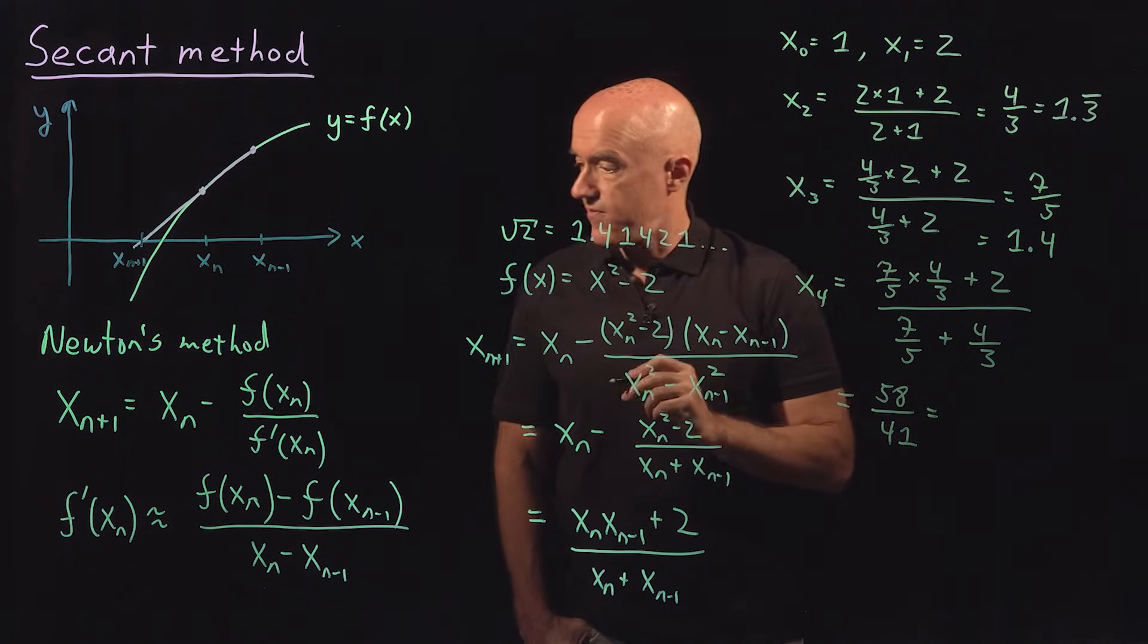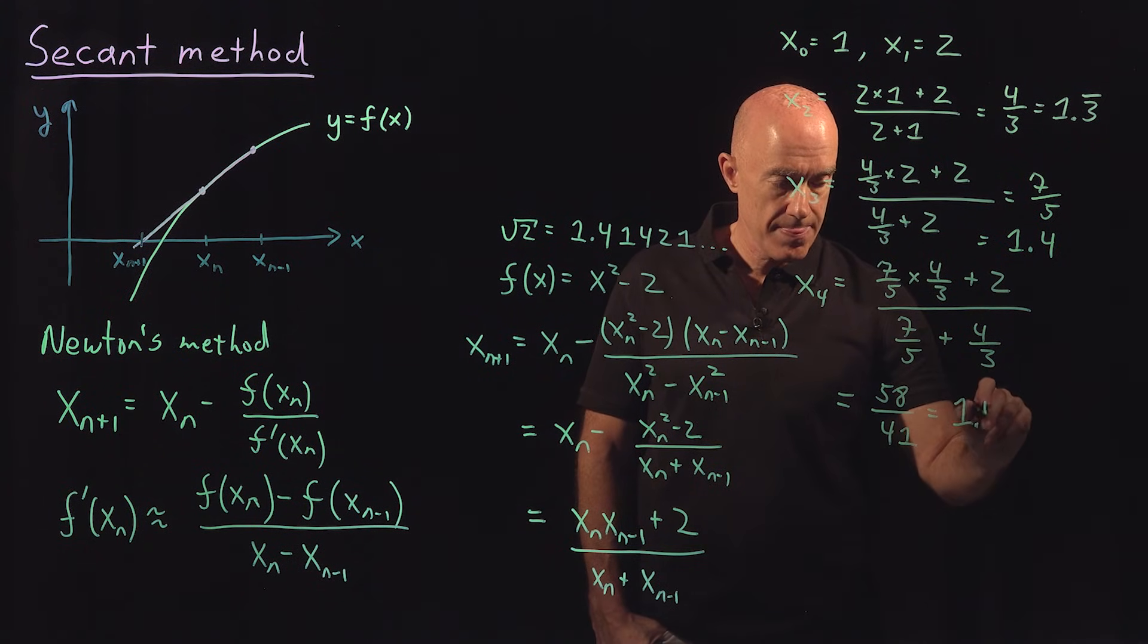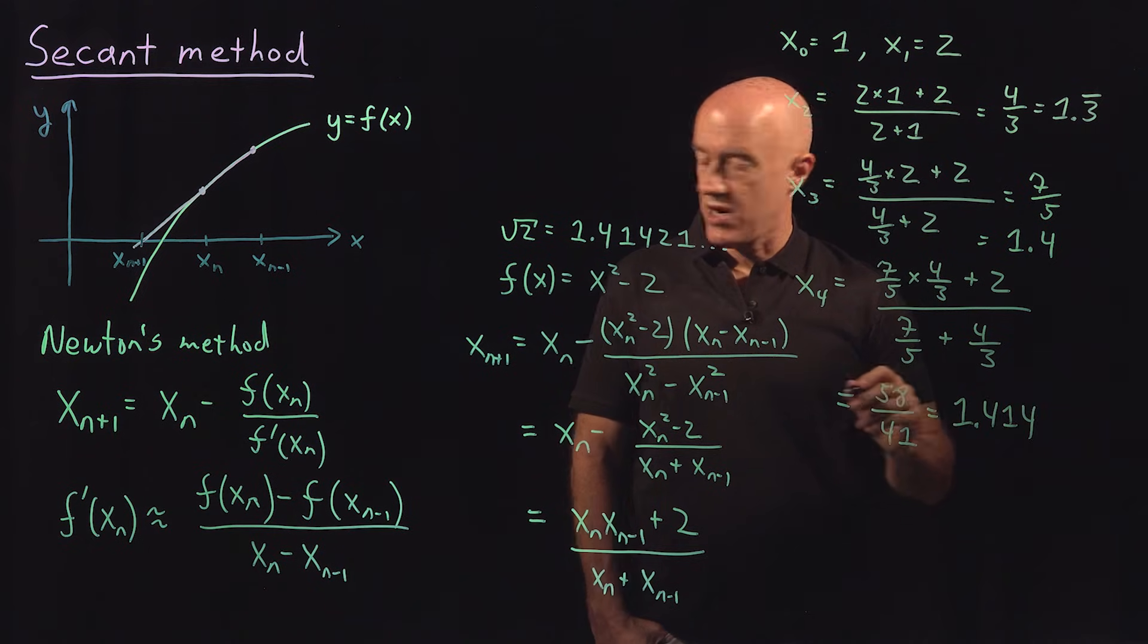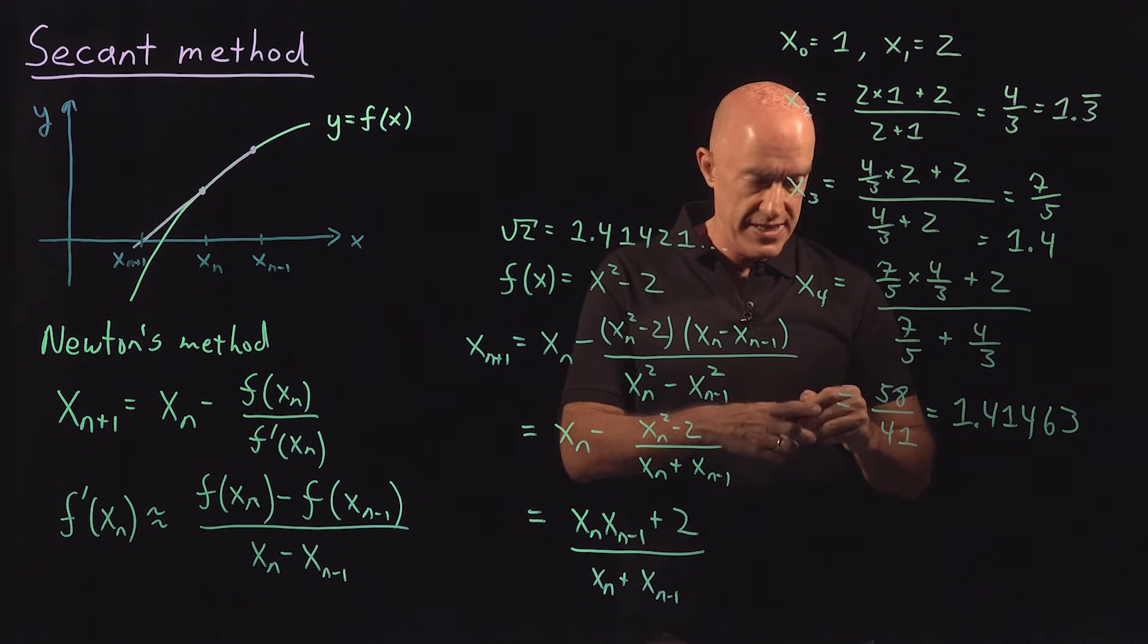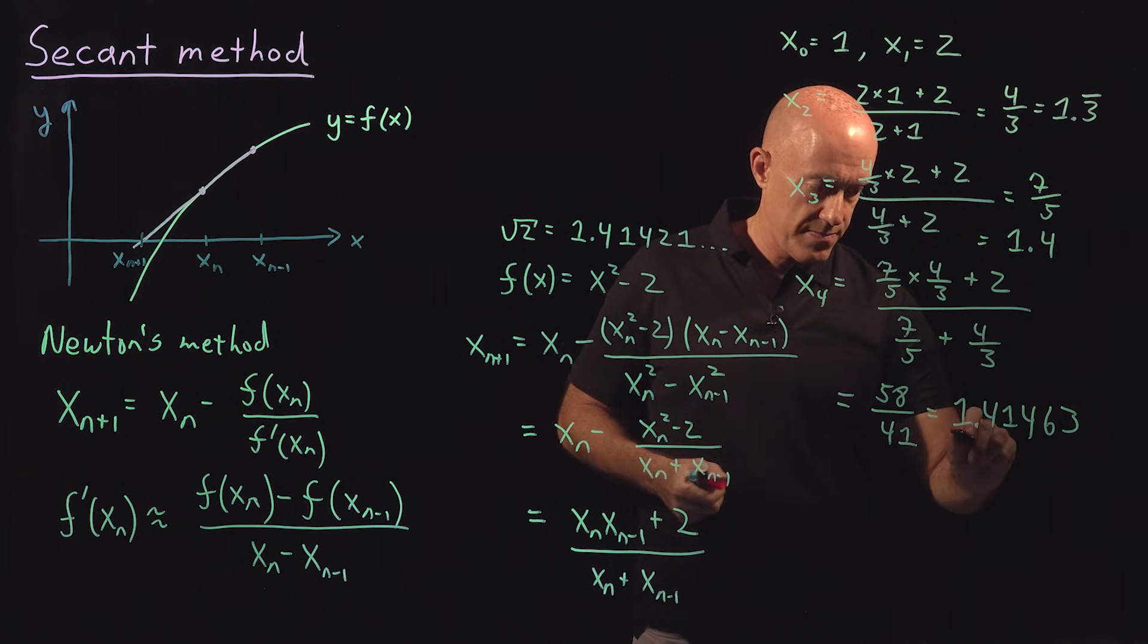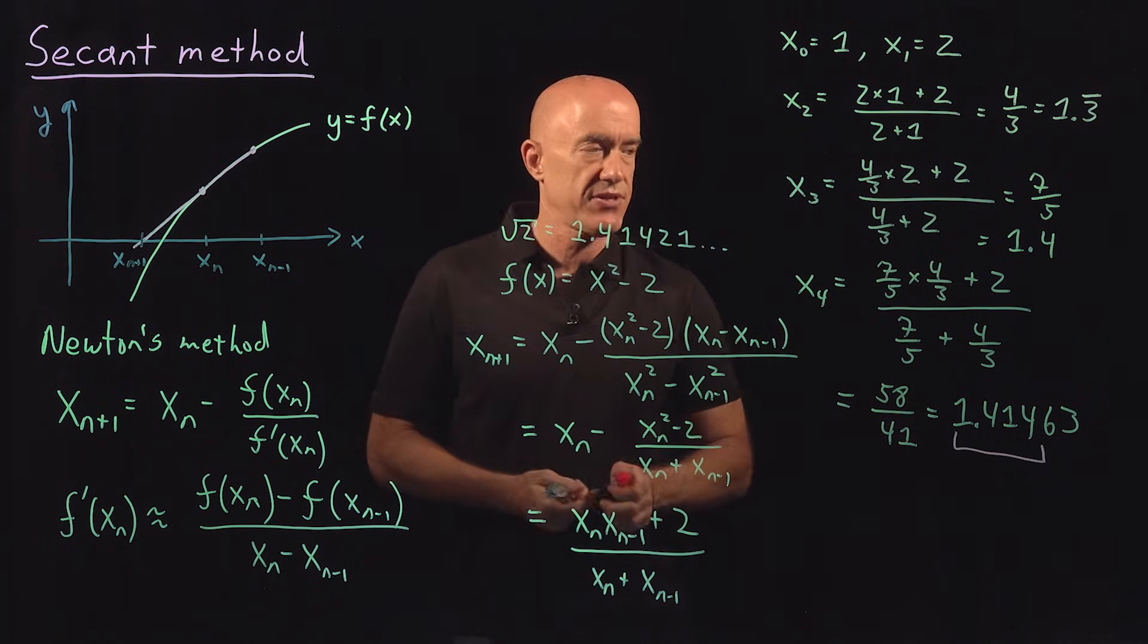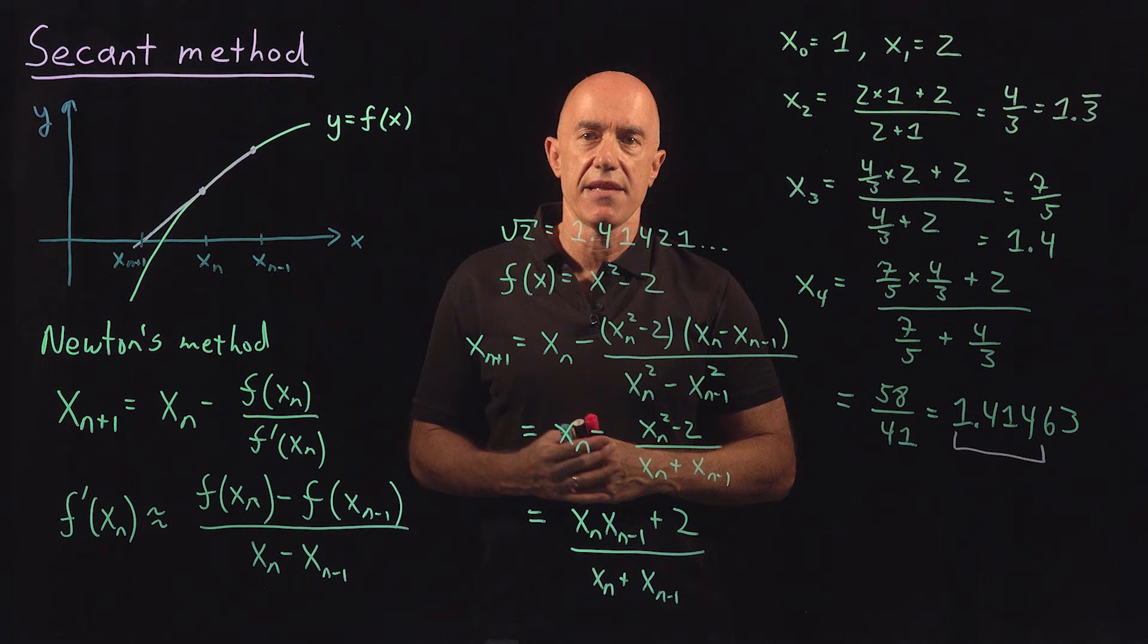And in decimal, 1.414, and the last two digits are 6, 3. So 1.414, we see that this already matches to the square root of 2 over here. So the convergence is pretty fast. This is an illustration of secant method.